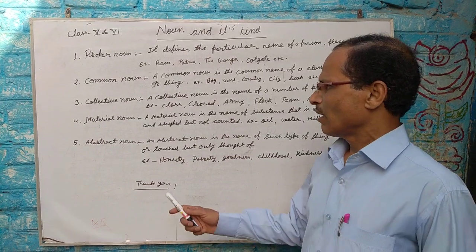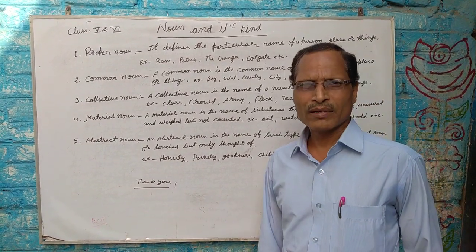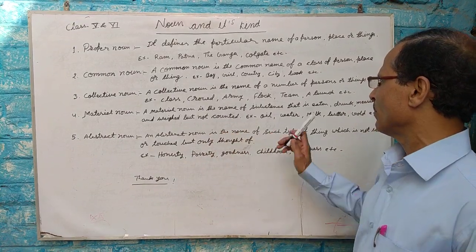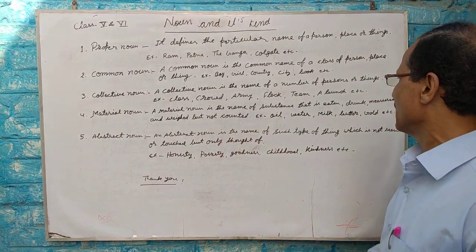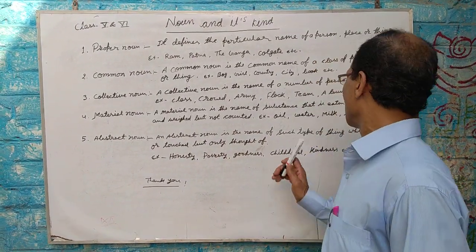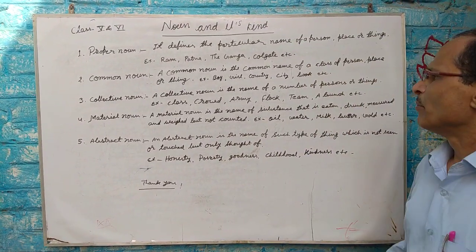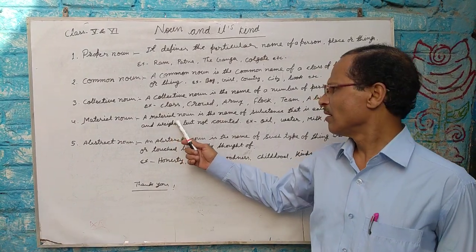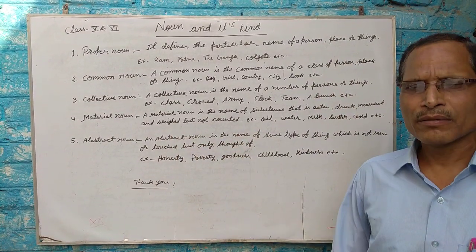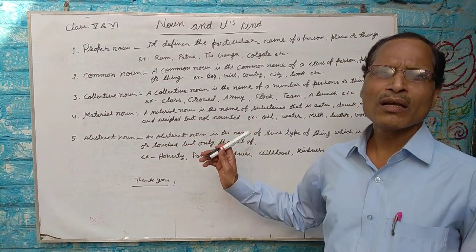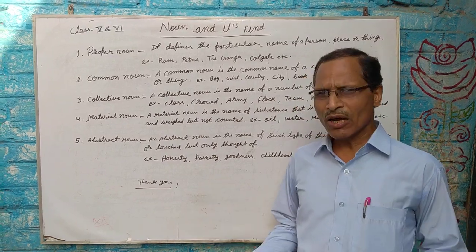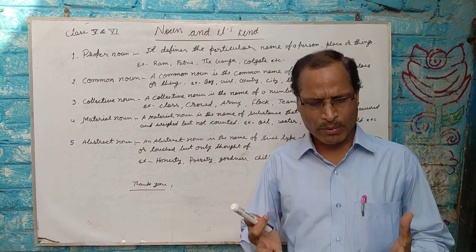The next is material noun. A material noun is the name of a substance that is eaten, drunk, measured, or baked, but not counted.